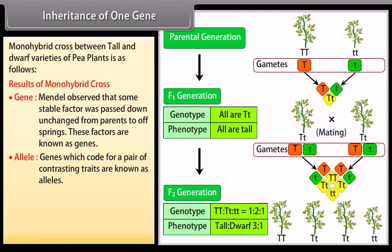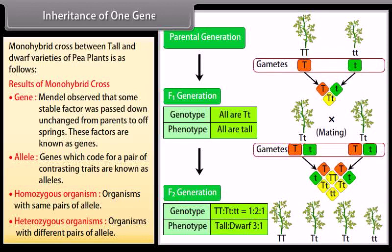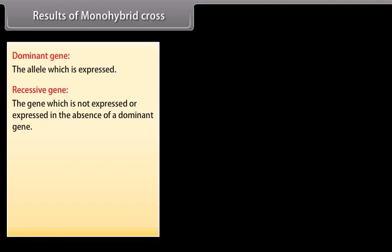Alleles: genes which code for a pair of contrasting traits are known as alleles. Homozygous organisms have the same pairs of alleles. Heterozygous organisms have different pairs of alleles. Dominant gene: the allele which is expressed. Recessive gene: the gene which is not expressed, or is expressed only in the absence of the dominant gene.